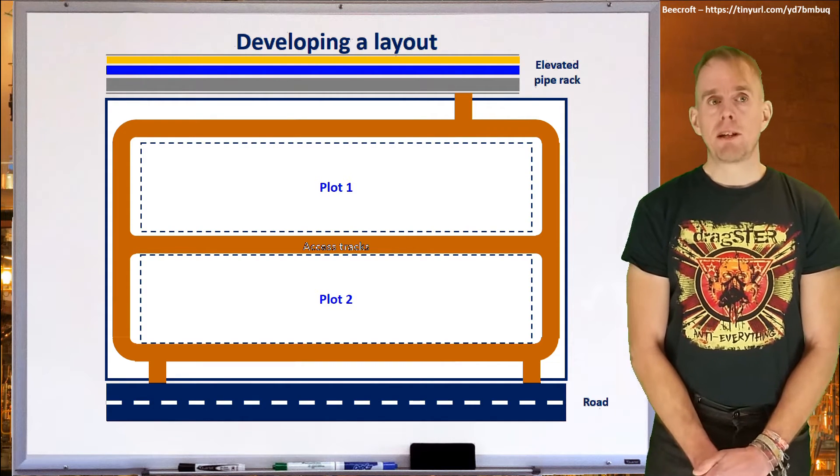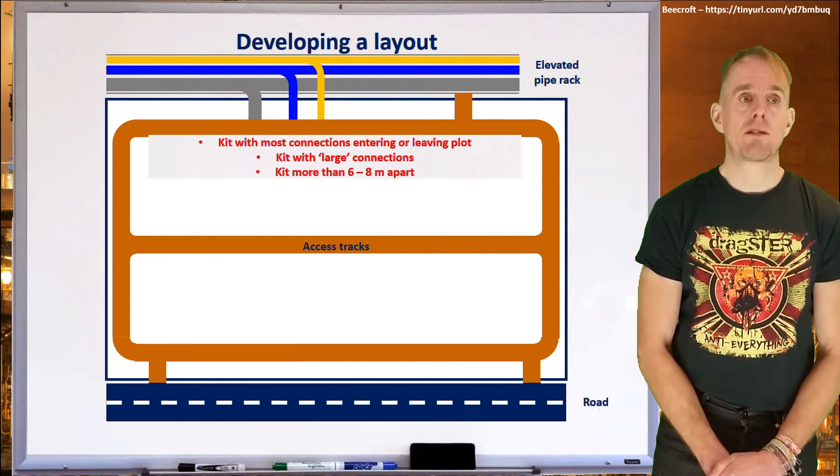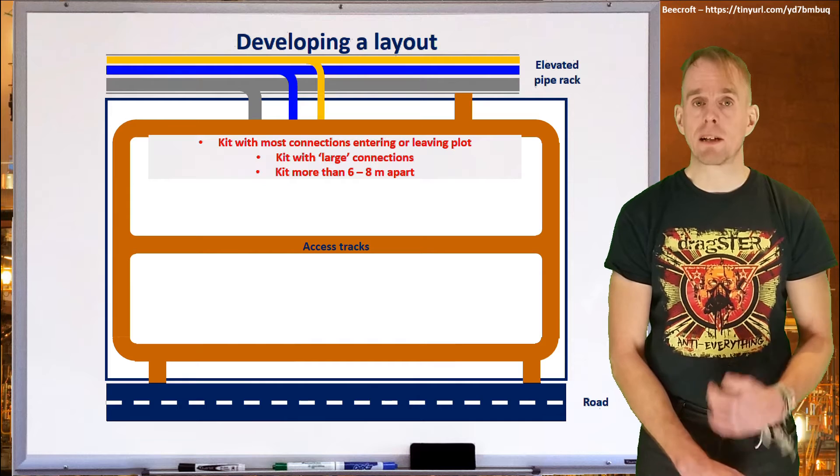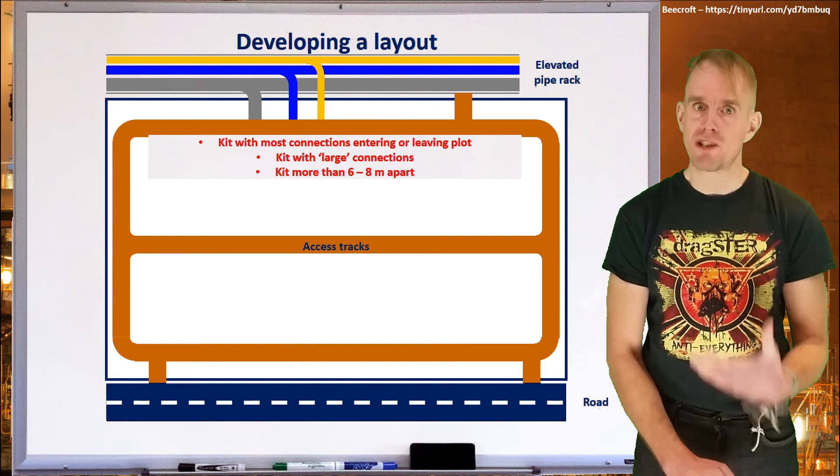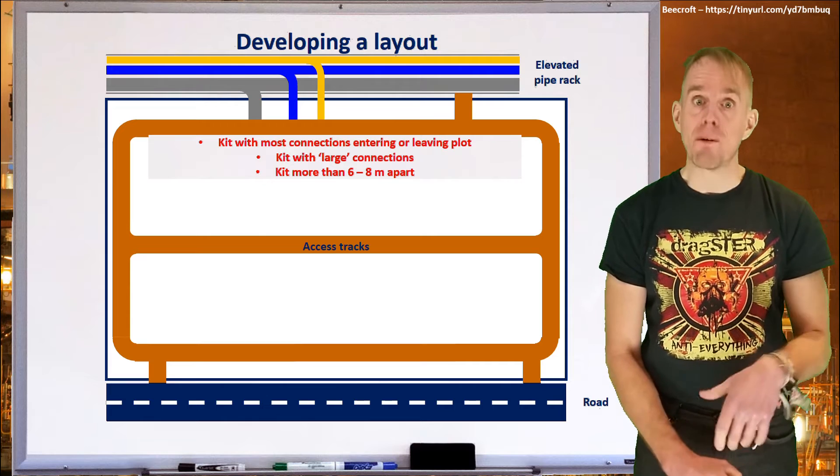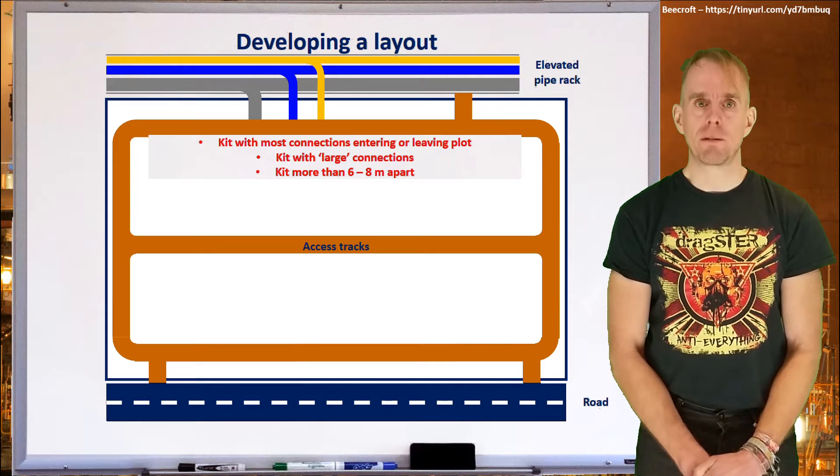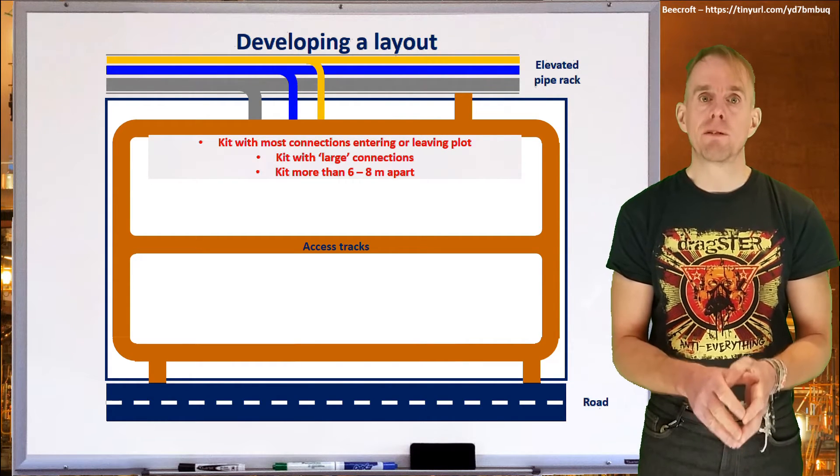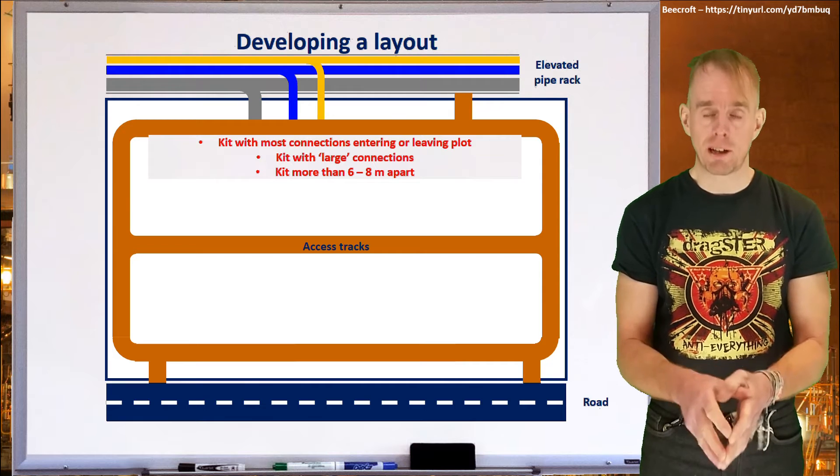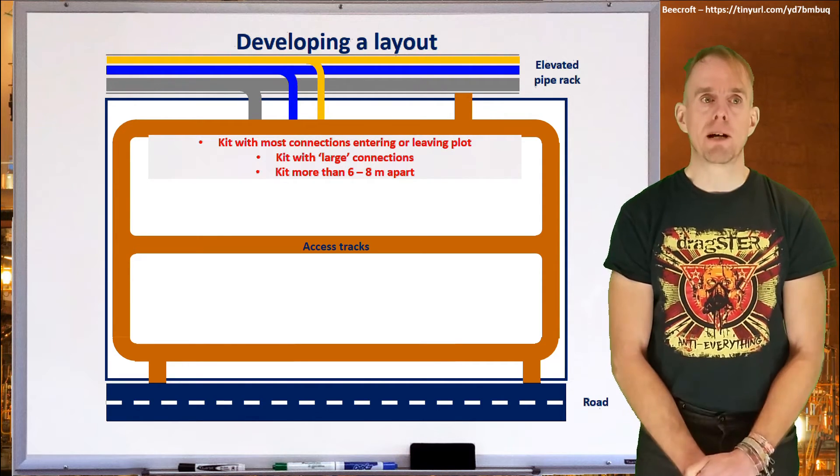The next thing we need to think about is where we're getting our materials into the plant. And so kits with connections entering and leaving the plant really should be placed next to the pipe racks upon which the pipes exist that allow material to be taken into the plant and also exist to take material away from the plant. And so you don't want massive pipe runs into the plant complex trying to deliver feedstock or take away finished product when you can easily place them next to a pipe rack.